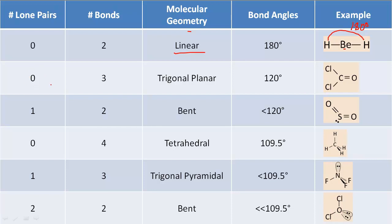The next one is zero lone pairs but three bonds — we call this trigonal planar. The bond angles are 120 degrees. We want to make sure those three bonds are as far apart from each other as possible. Three times 120 degrees equals 360 degrees, which is a circle. These shapes are 120 degrees apart because that's the furthest apart in a circular arrangement. Planar means it would lie flat on a piece of paper, and trigonal refers to the triangle shape from the three bonds.